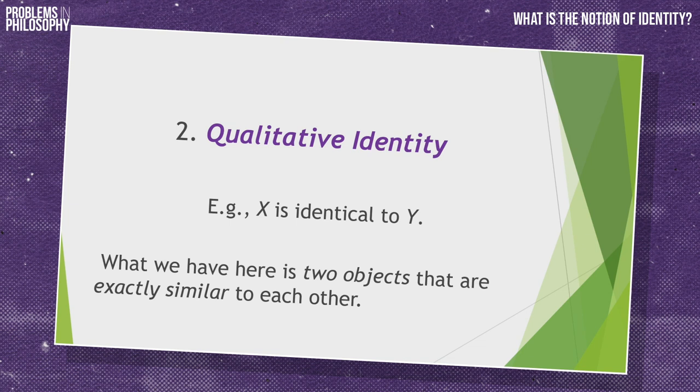There's a second kind of identity called qualitative identity. Consider X is an object and Y is another object. If I say in a qualitative identity sense, X is identical to Y, I'm not talking about one single object. I'm talking about two distinct objects that completely agree in their properties — they might have exactly similar size, shape, and color. So numerical identity: one object. Qualitative identity: exactly similar but distinct objects.